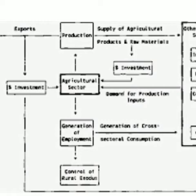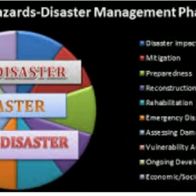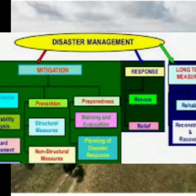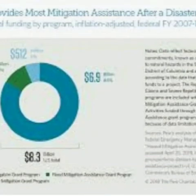Further mitigation activities include: flood plain mapping; reinforced tornado safe rooms; coating of electrical cables to prevent ice buildup; raising up homes in flood-prone areas; disaster mitigation public awareness programs; and insurance programs.